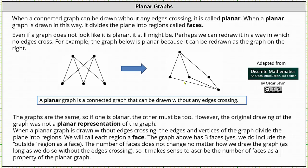The graph above has three faces. Yes, we do include the outside region as a face. So again, we have two inner regions and one outside region, giving us a total of three regions or three faces. The number of faces does not change no matter how we draw the graph, as long as we do so without the edges crossing. So it makes sense to ascribe the number of faces as a property of the planar graph.